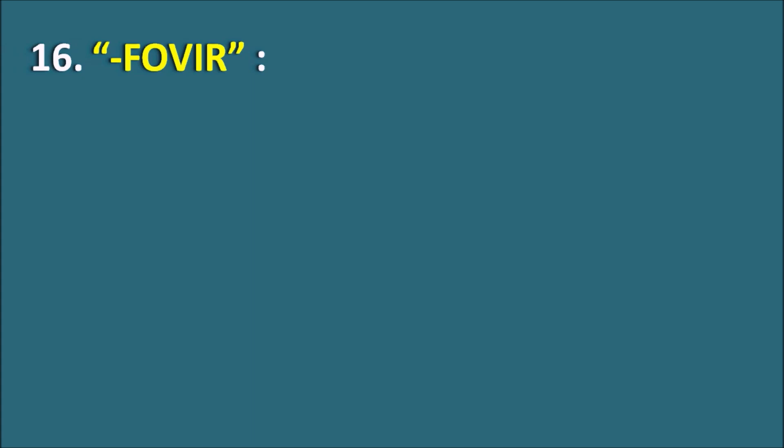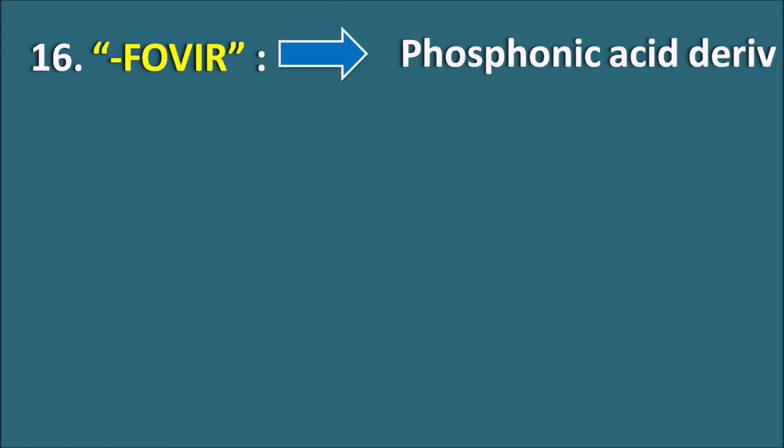The 16th suffix is Fovir. Fovir indicates they are the Phosphonic Acid Derivatives. Phosphonic Acid is just like Phosphoric Acid. When it is present in the molecule it can be indicated by the term F4. The F4 indicates they are having the Phosphonic Acid and they are antiviral agents, so the suffix vir. So F4 plus vir gives us the Fovirs.